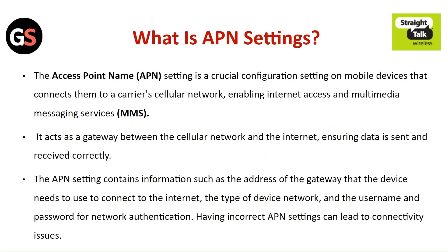What are APN settings? The access point name settings is a crucial configuration setting on a mobile device that connects it to the carrier's cellular network, enabling internet access and multimedia messaging services. It acts as a gateway between the cellular network and the internet.